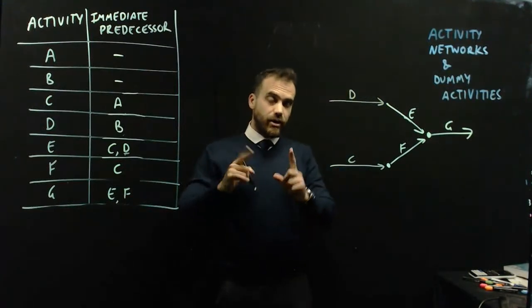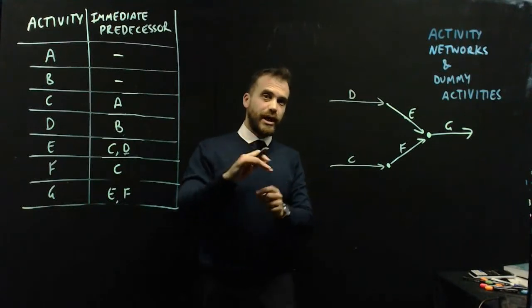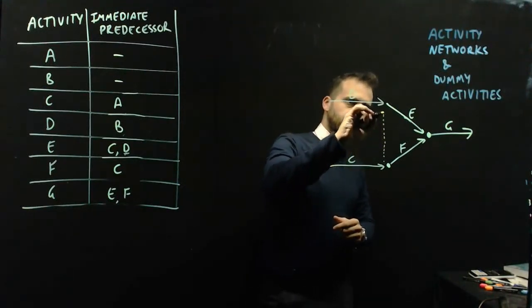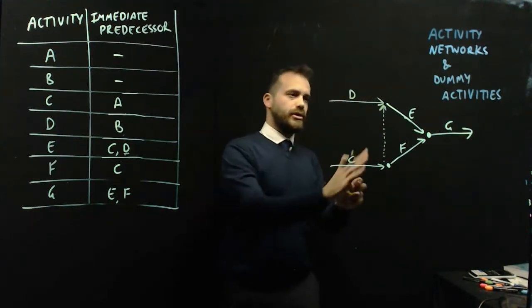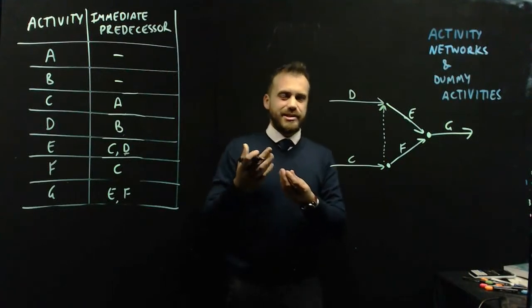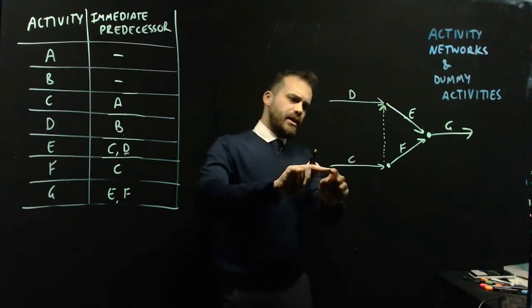And then I can draw in what's called a dummy activity using this dotted line. Now, what the dotted line, it's kind of like C in a little bit. It's saying, well, we need C as a predecessor to E.